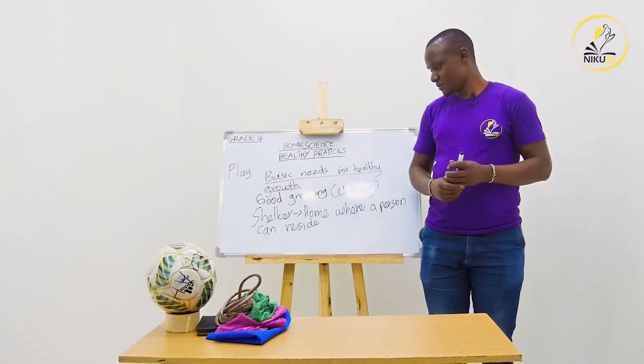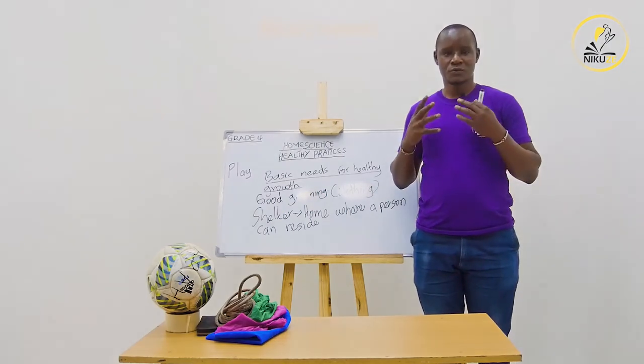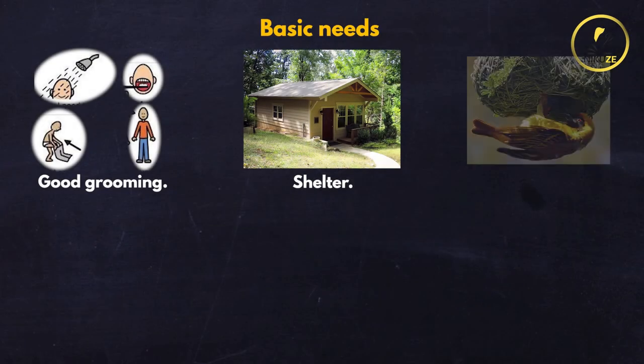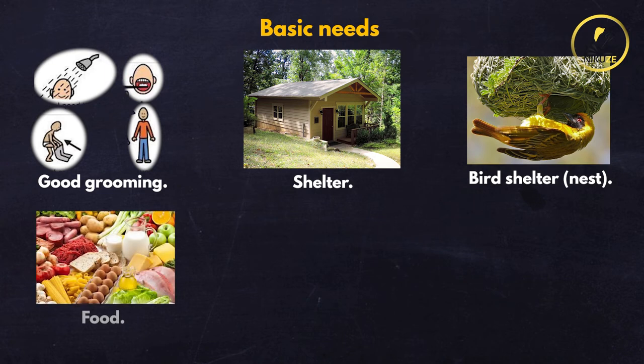Shelter comes in various ways. Plants have got their shelter, birds and animals also have got their shelter. In the same way, human beings also need a shelter — somewhere where they can spend their night and call their home. Our third basic need is food.